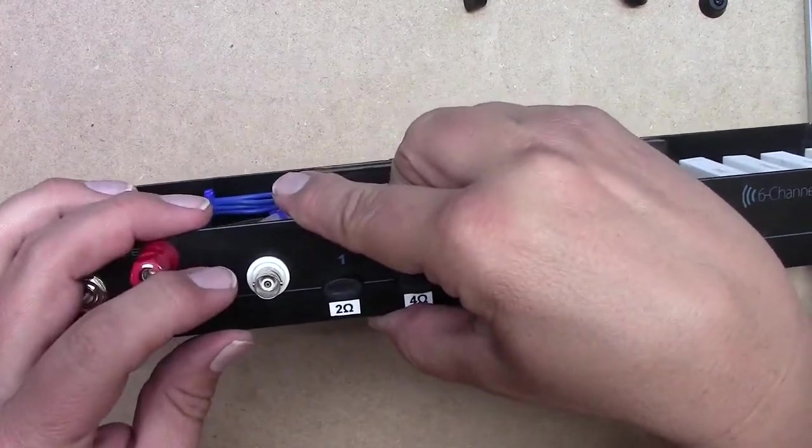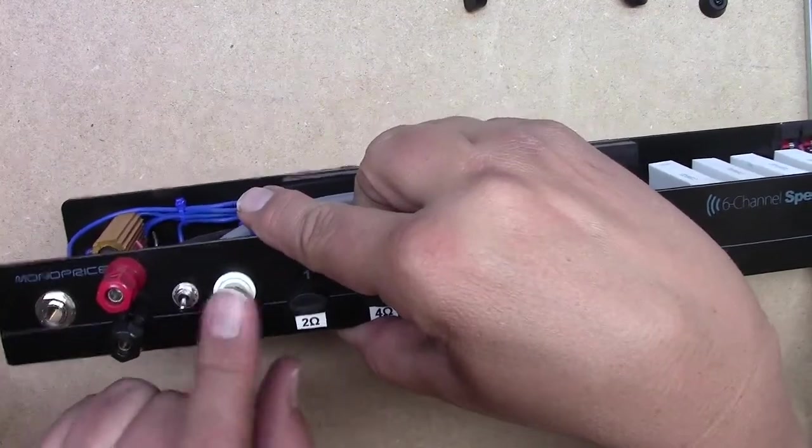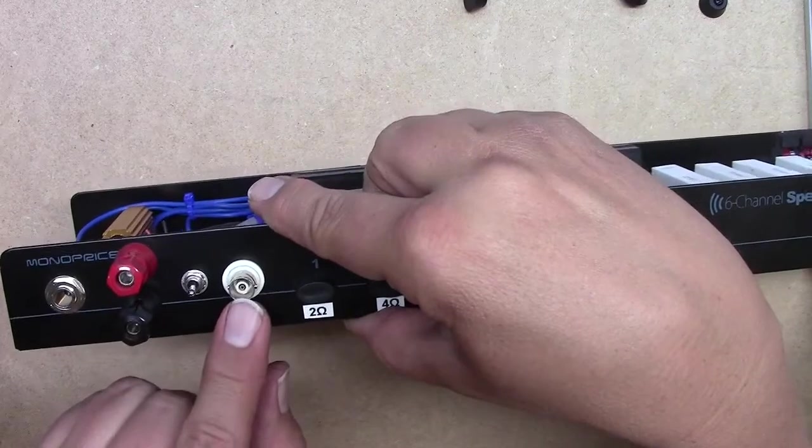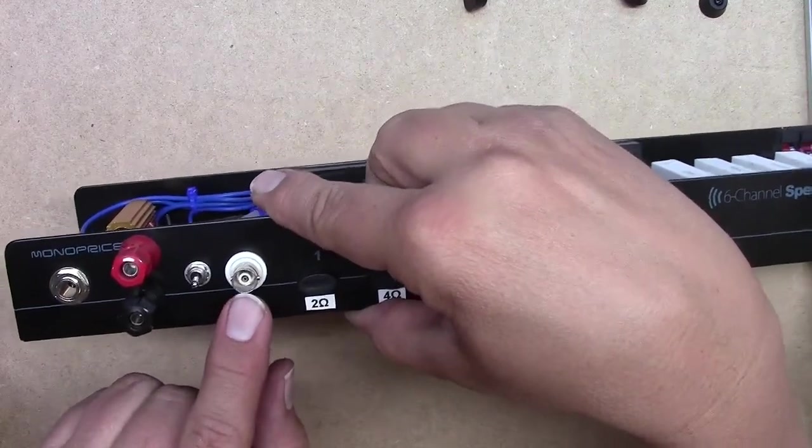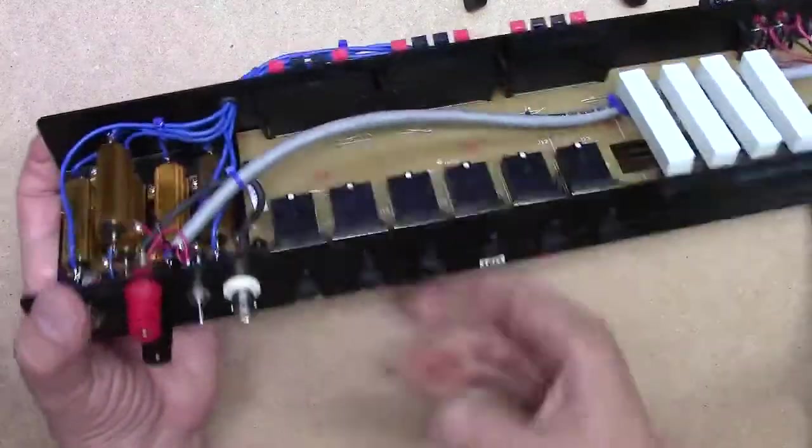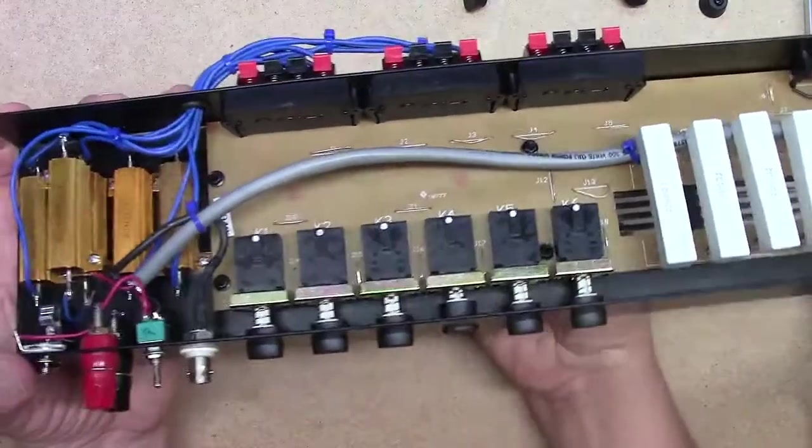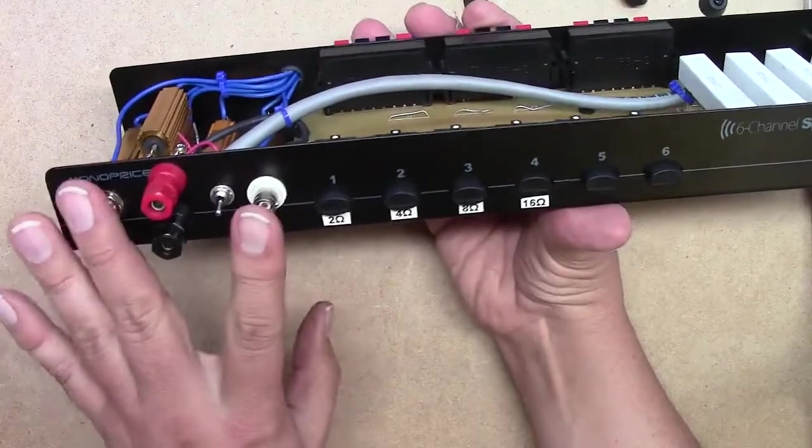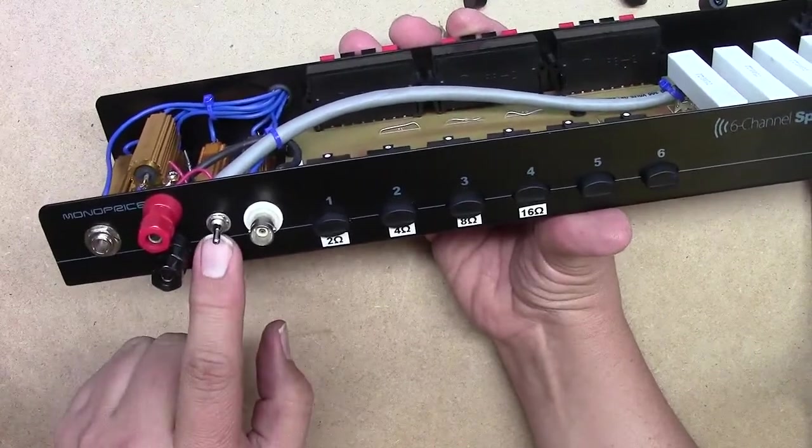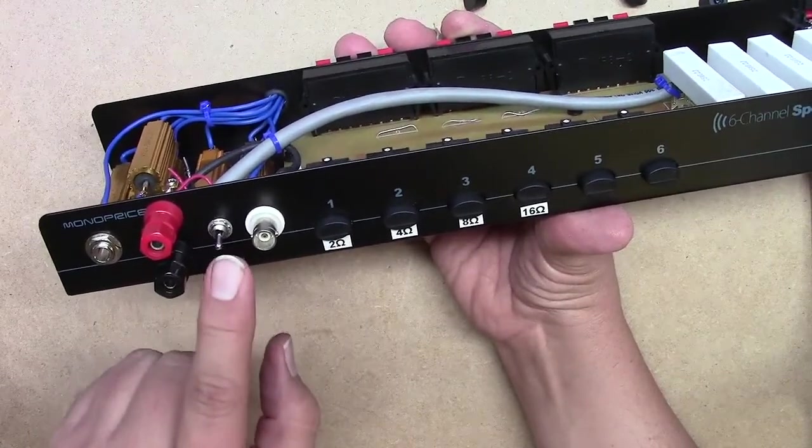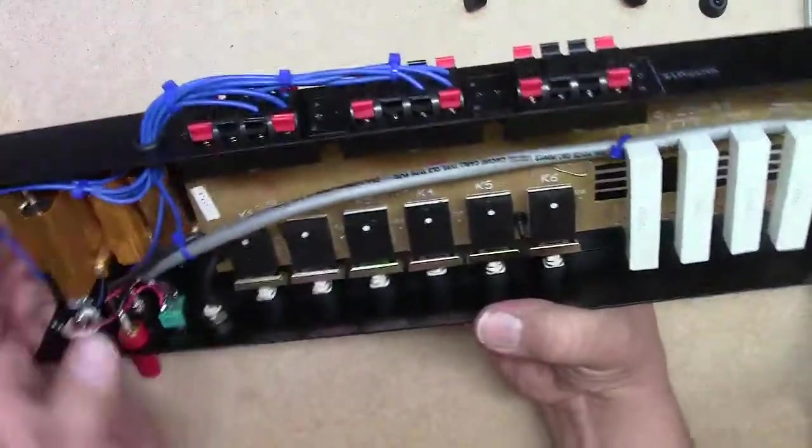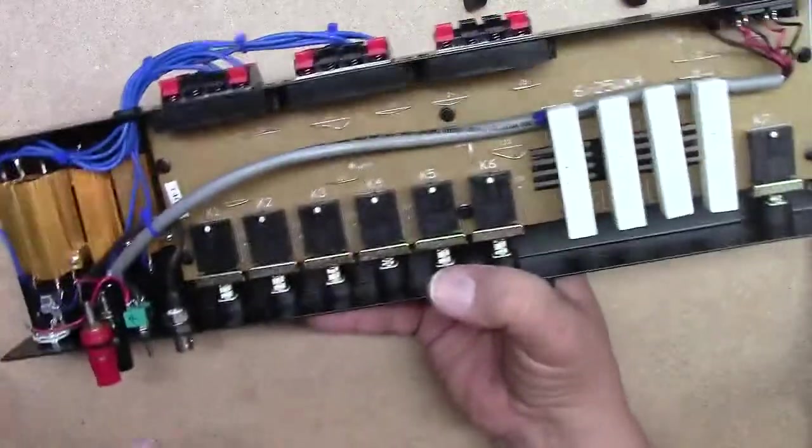This switch here is a center-off double pole double throw switch, and this is a BNC output that will go into my signal chain up to my scope, spectrum analyzer, and distortion analyzer. Inside here, these two inputs go into this switch and this switch switches between the right and the left side of back here.